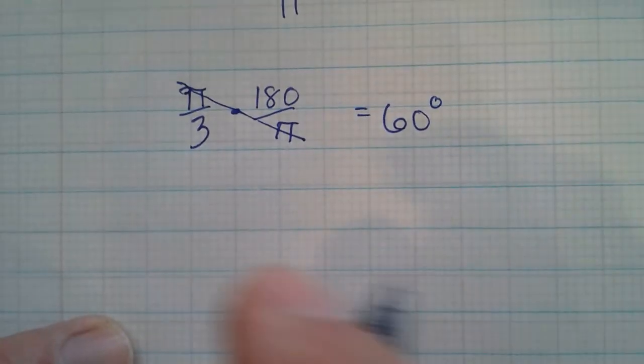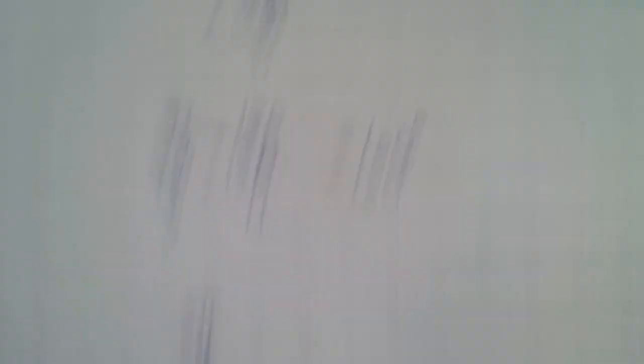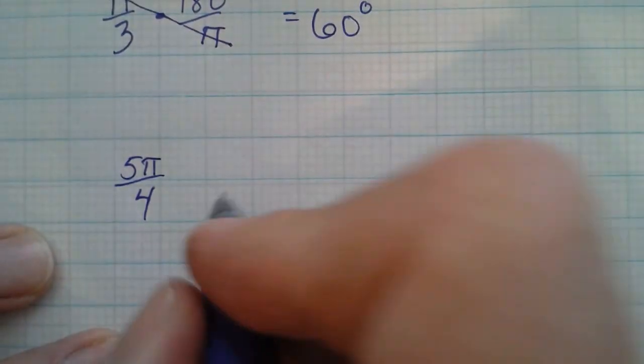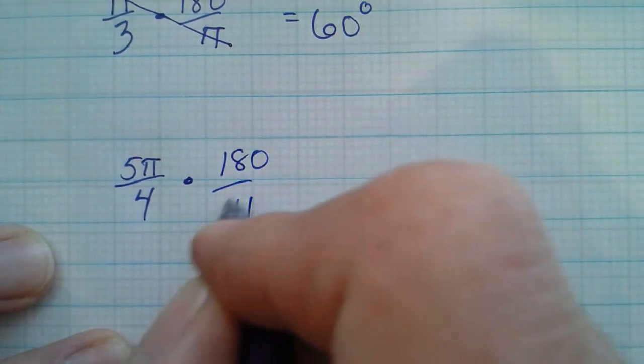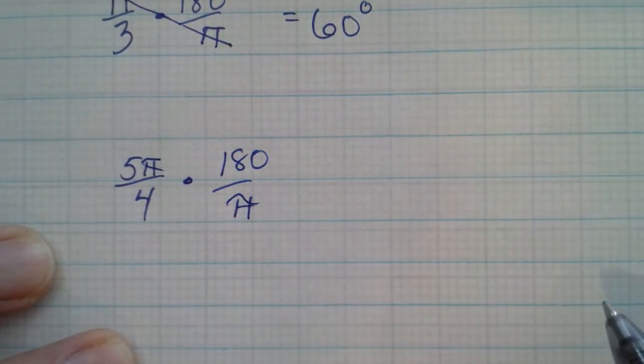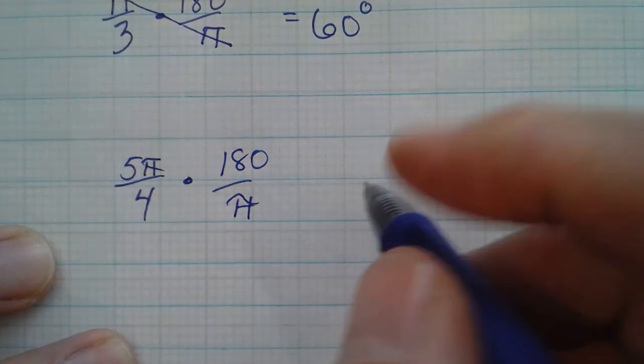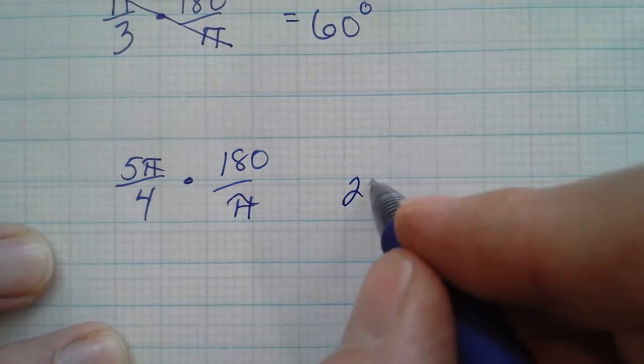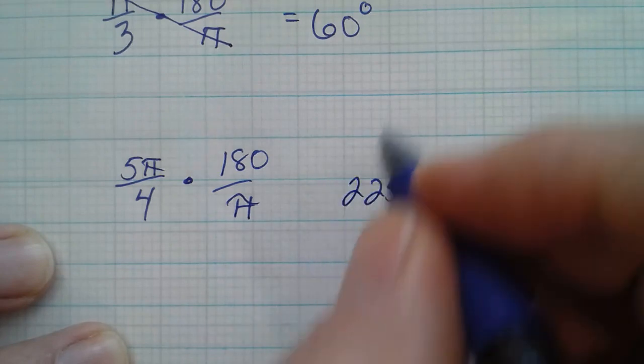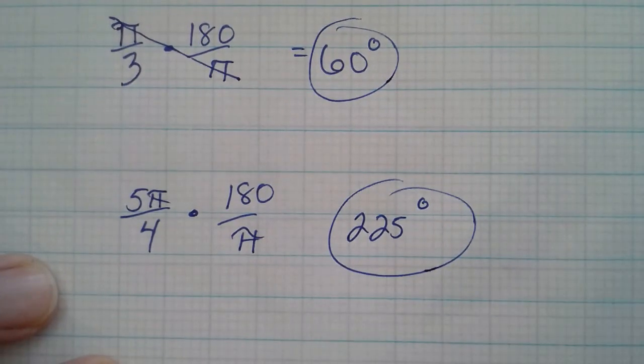Okay, so another example. If I had 5π over 4, if I wanted to convert that to degrees, you'd multiply by 180 over π. π's cross off. 5 times 180 divided by 4 is, let's see, 180 plus 4, 225 degrees. Okay, so just multiply by 180 over π, and then you'll get the degrees.